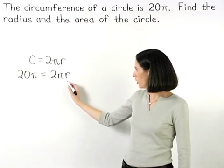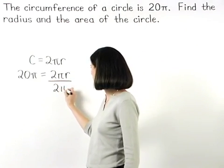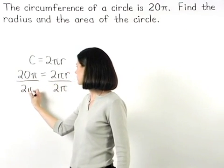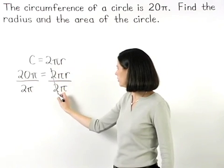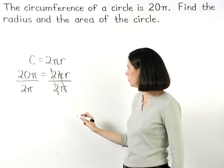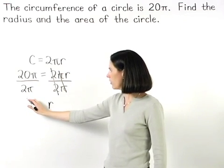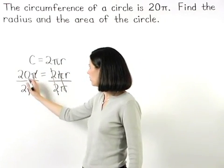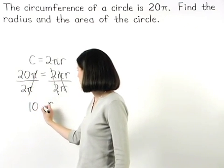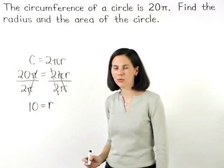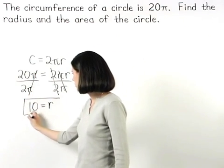Now to solve for r, we divide both sides of the equation by 2 pi. On the right side, the 2's cancel and the pi's cancel, and we're left with r. On the left side, the pi's cancel, and 20 divided by 2 is 10. So we have 10 equals r. So the radius of the circle is 10.